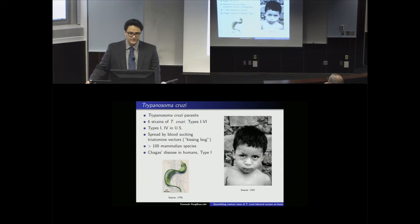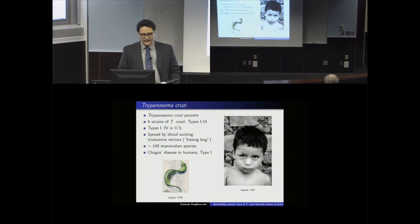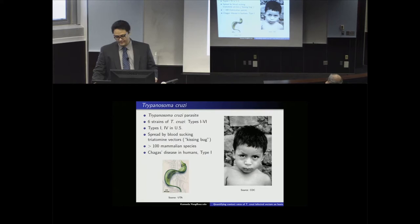This vector has gotten the nickname the 'kissing bug.' T. cruzi is found in over 100 mammalian species, and when T. cruzi infects humans it's known as Chagas disease. The boy shown here has been bitten by a vector on his eye — his eye is swollen, which is one of the signs of being bitten by the vector.